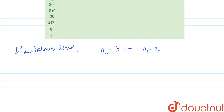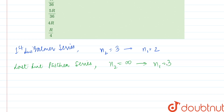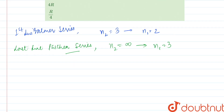The last line of the Paschen series would be where n2 goes from infinity to n1 equal to 3, because the Paschen series has n1 equal to 3.